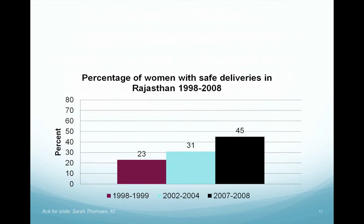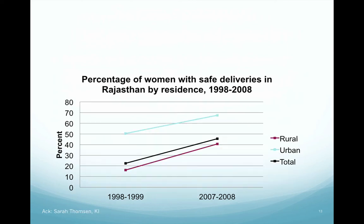Looking at the Indian state of Rajasthan and the proportion of women who had safe deliveries, this number rose from 23% to 45% over a decade — nearly doubling, which is excellent progress. However, if you disaggregate the numbers and look at rural versus urban women, you can see that while both increased, urban women consistently had much higher access than rural women — a gap hidden in the aggregate averages. So residence — being a rural resident — actually reduces your chances of having a safe delivery, and we need to look at how to change things for that group.